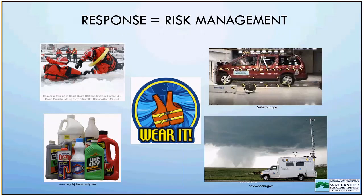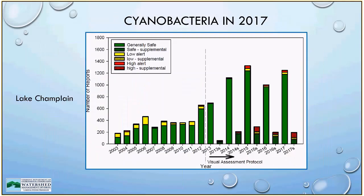This data is from Lake Champlain in 2017 and prior years. The bars represent the number of cyanobacteria reports provided each summer as part of our monitoring program. Generally safe conditions shown in green indicate very few cyanobacteria present and little risk of exposure during recreational activities; red and yellow indicate higher risk. The takeaway message is that 90% of the time during our monitoring period, conditions are considered safe for recreation. On Lake Champlain, some locations clearly have more blooms than others, but in general cyanobacteria are not a risk or concern for human health during summer.